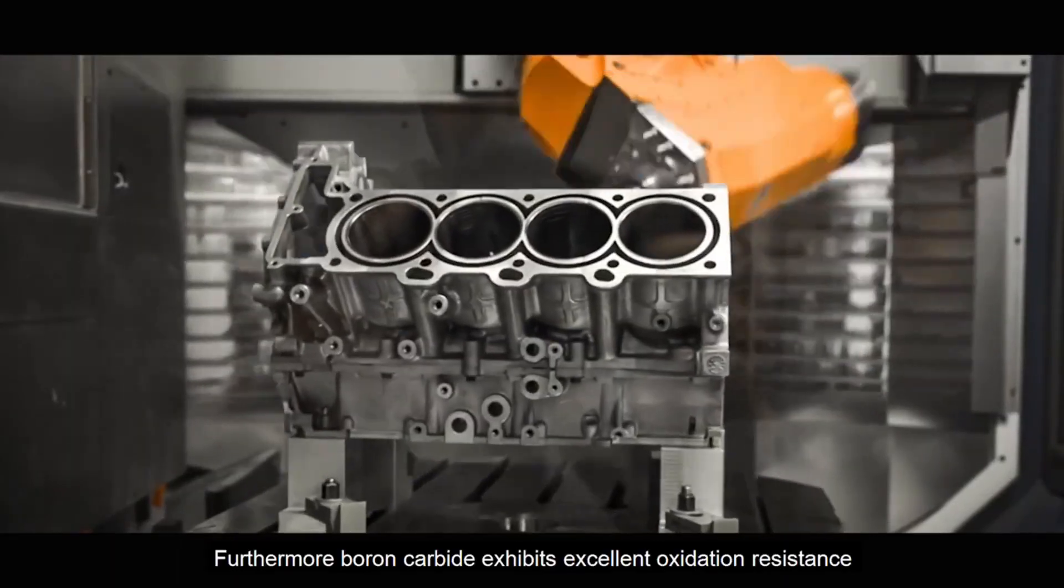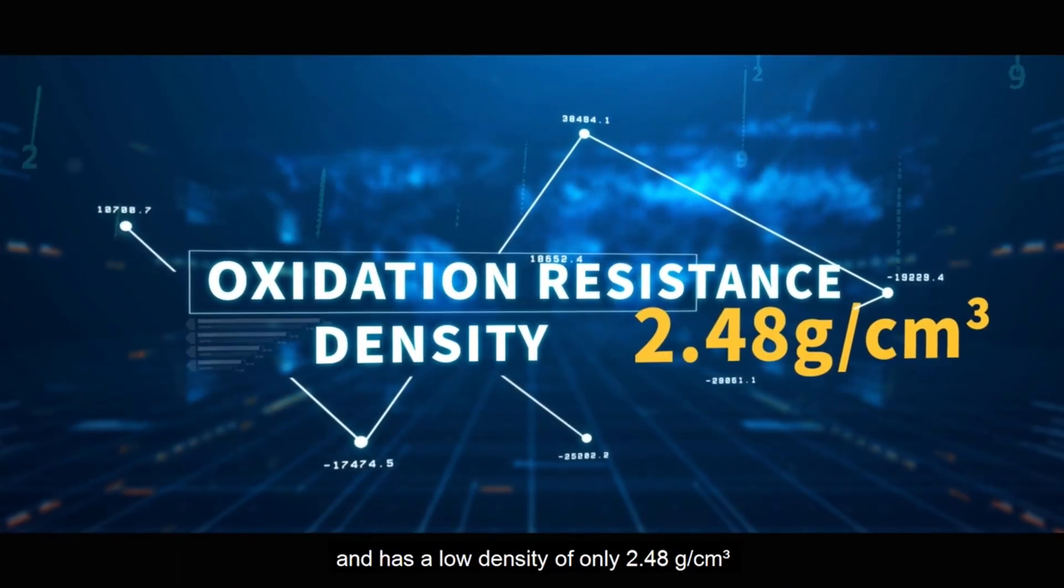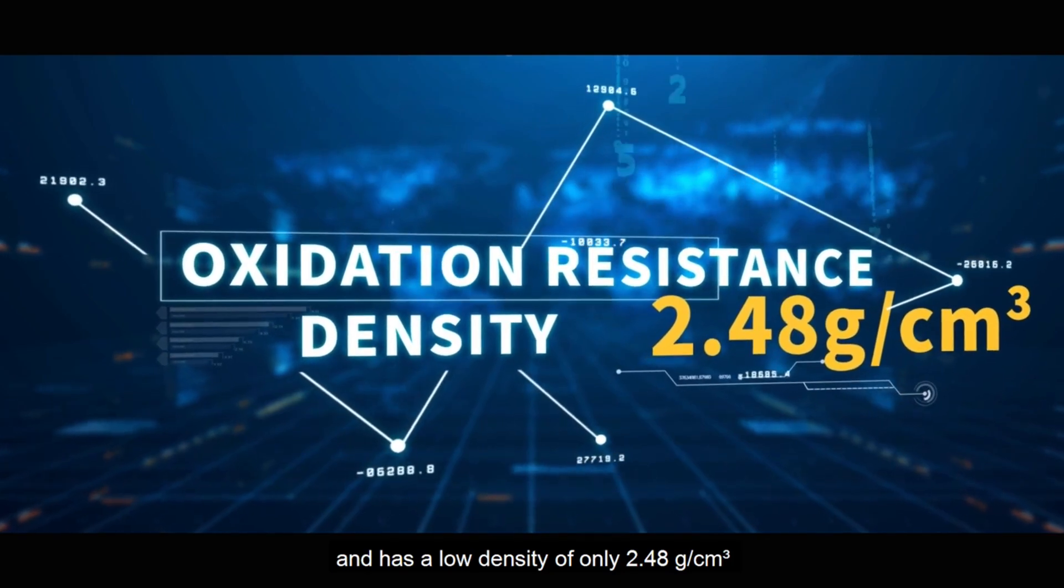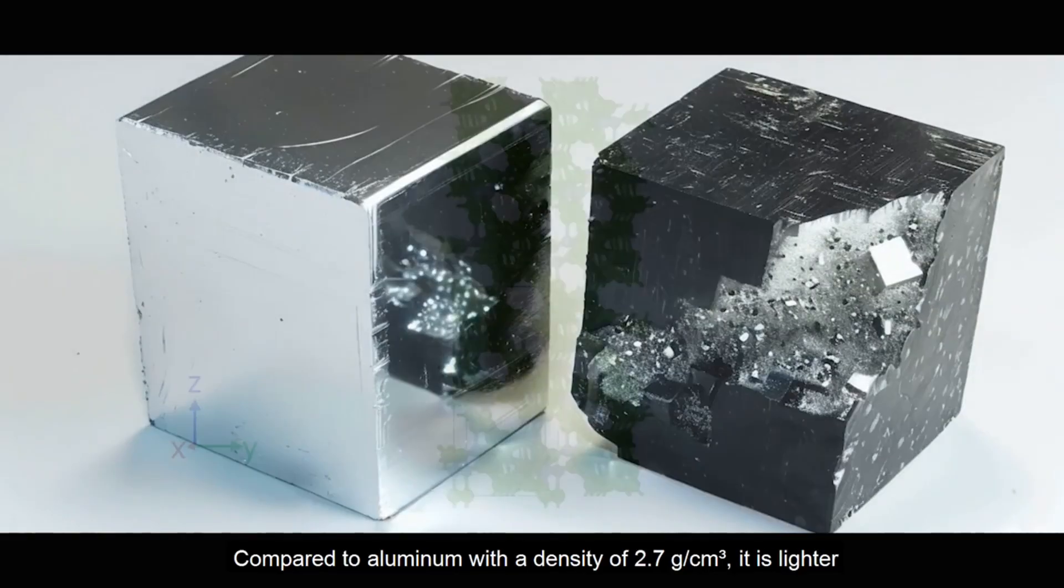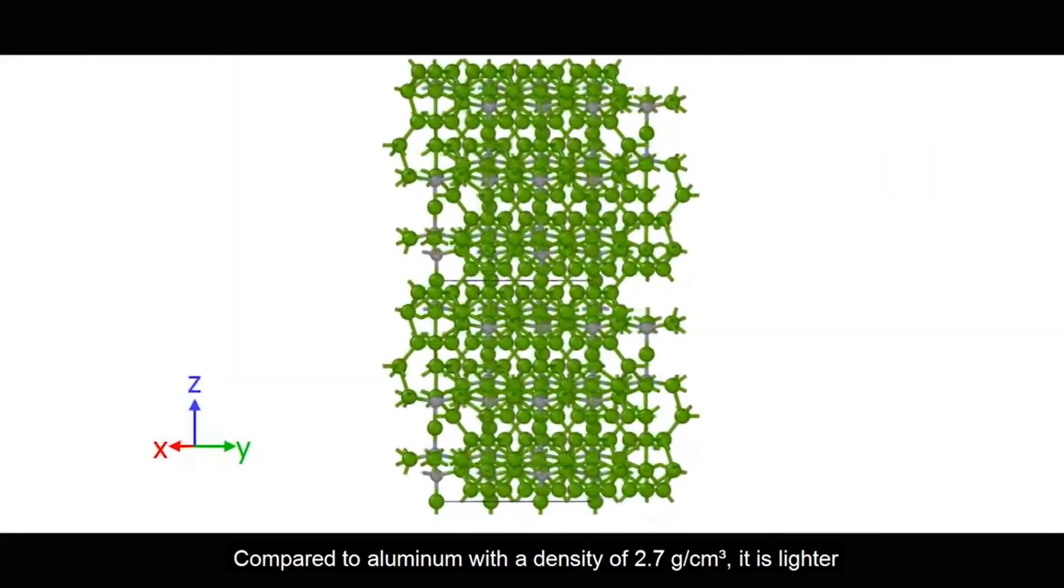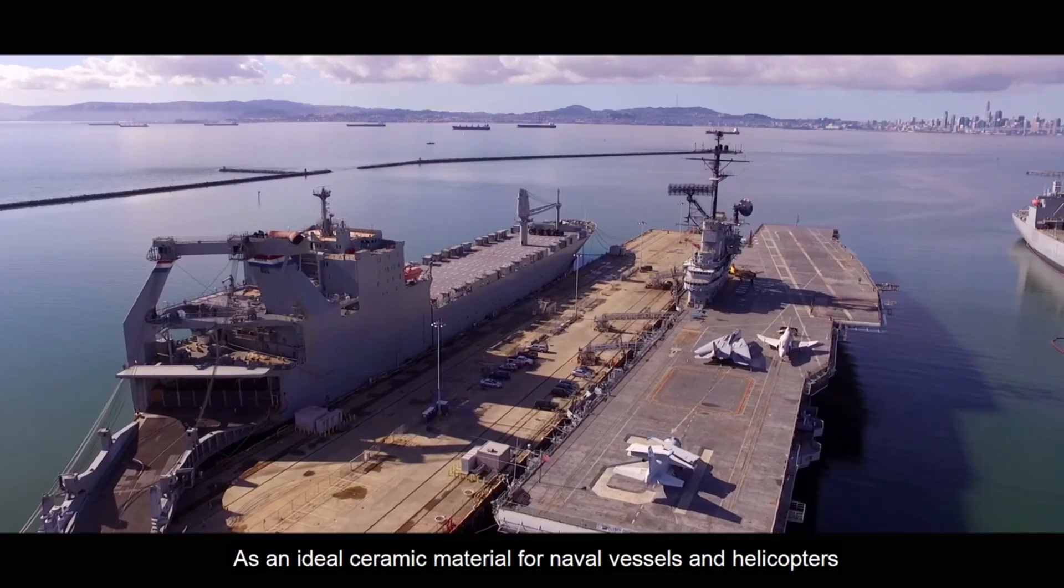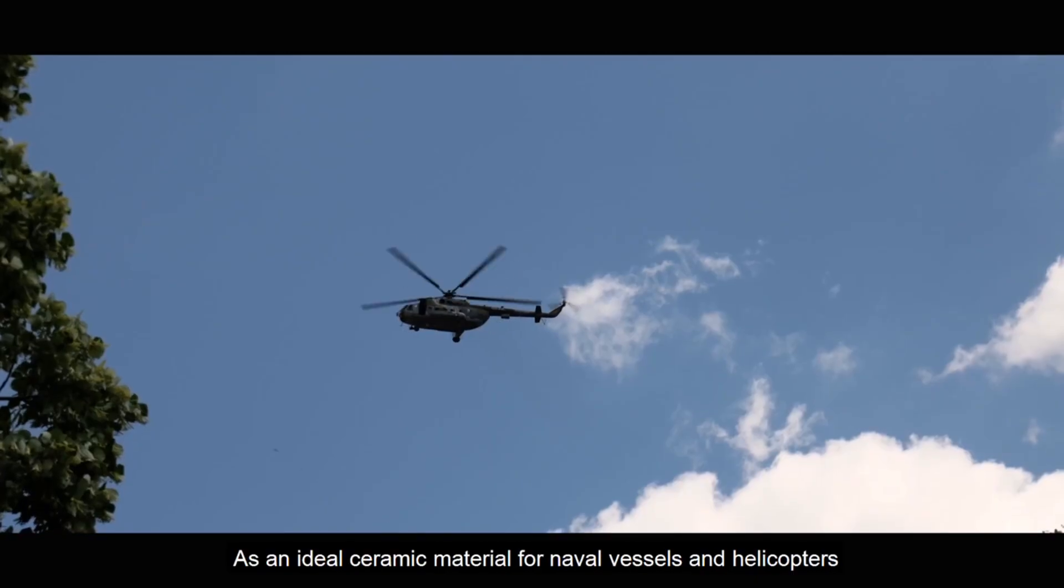Secondly, boron carbide exhibits excellent oxidation resistance and has a low density of only 2.48 grams per cubic centimeter. Compared to aluminum with a density of 2.7 grams per cubic centimeter, it is lighter, making it an ideal ceramic material for naval vessels and helicopters.